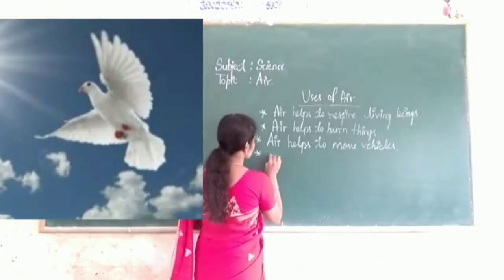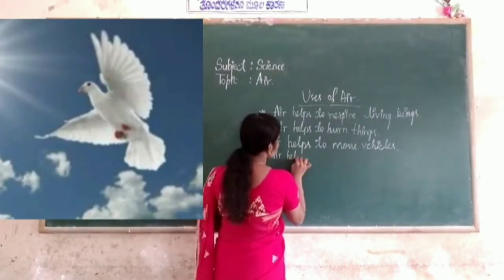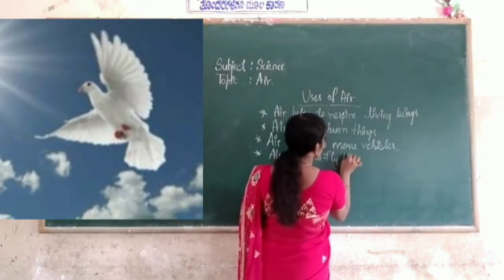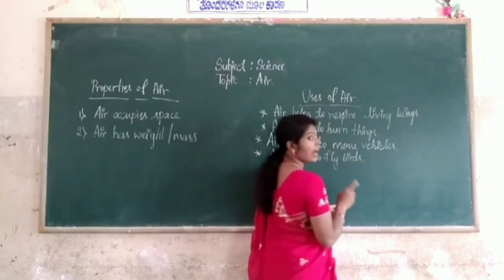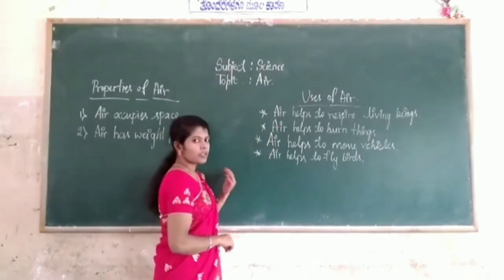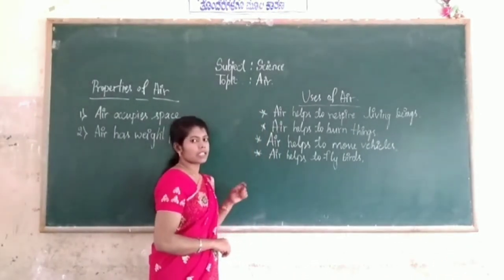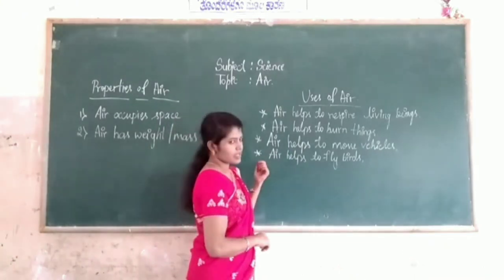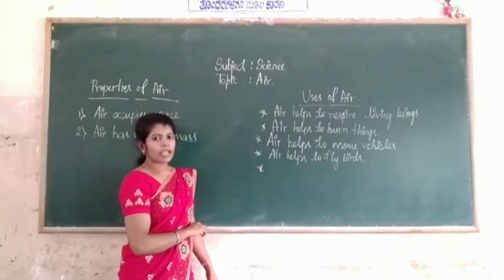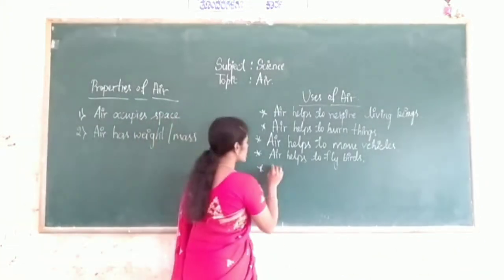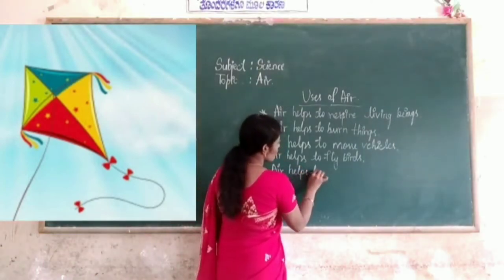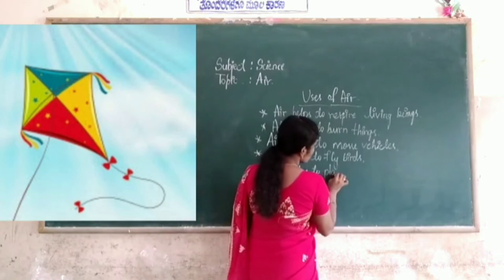Air helps to fly birds. Moving up with high curves, like aeroplanes and helicopters. Air helps them fly. Next, you commonly play kites. Air helps to fly kites also. These are the uses of air.